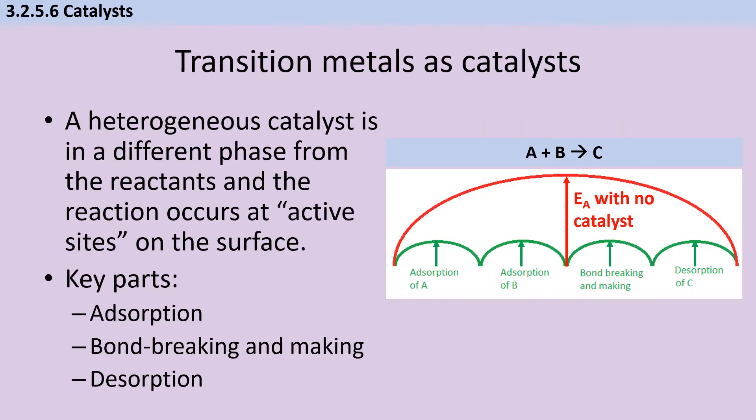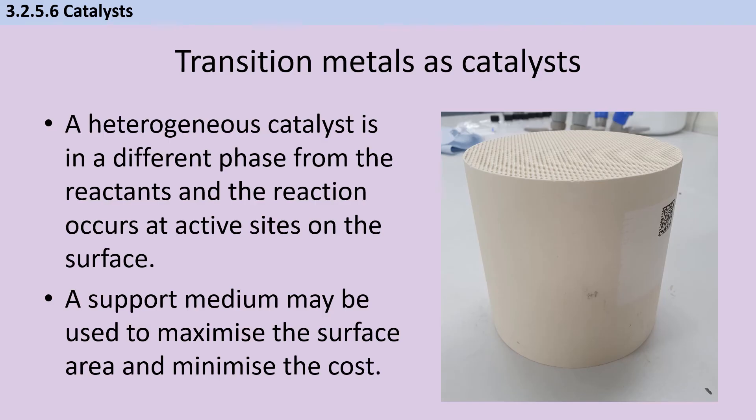We commonly see solid transition metals or transition metal compounds used as catalysts for reactions in which the reactants are either gases or aqueous solutions. The transition metal reduces the overall energy requirement by breaking the reaction into a number of smaller steps which occur at active sites on the surface. Remember, that term doesn't just apply to enzymes. The key parts are adsorption, in which the reactants adhere to the surface of the transition metal, bond breaking and making, followed by desorption in which the transition metal lets go. Very often the transition metal is milled into tiny particles which are applied to a support medium to maximize surface area and minimize cost.